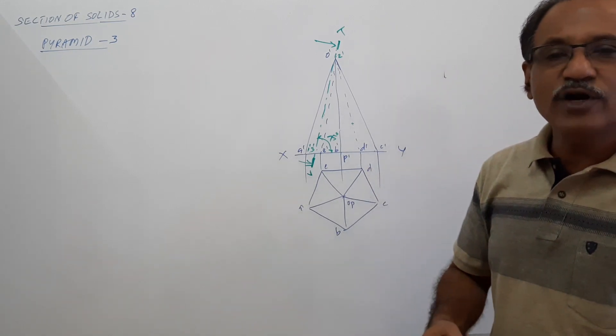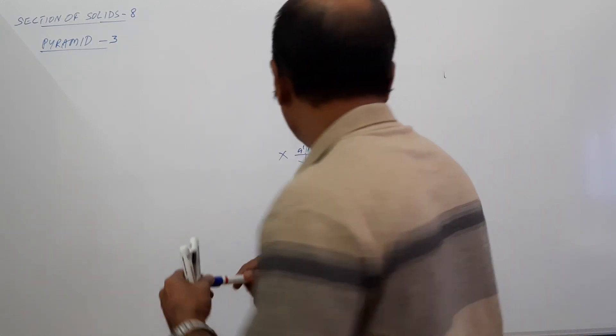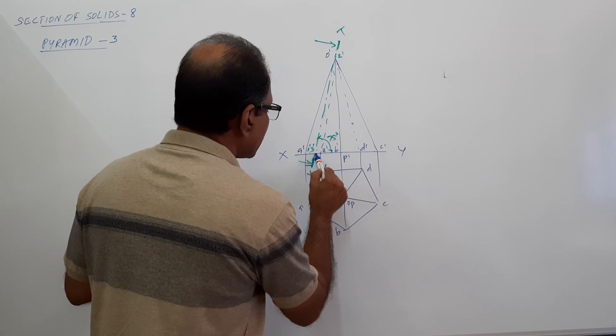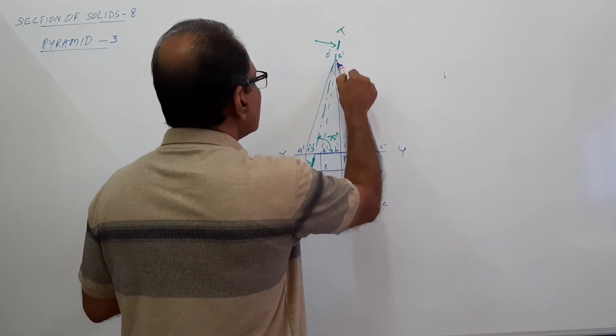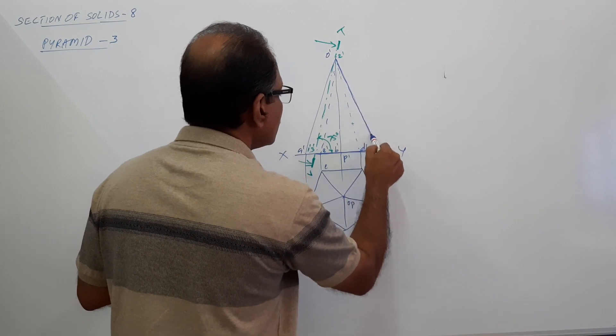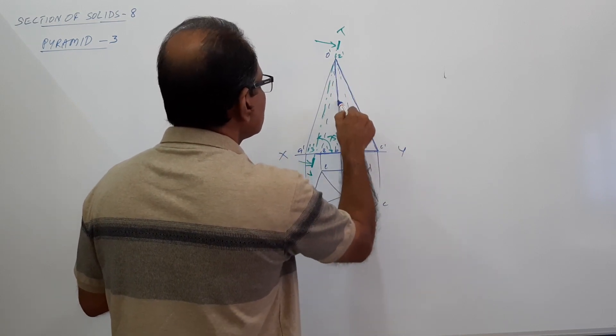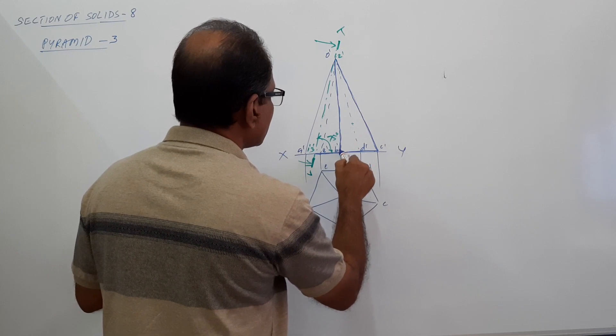Once you draw the cutting plane, you have to darken the portion that is remaining. What is remaining? This much is remaining. This has to be darkened. Okay.